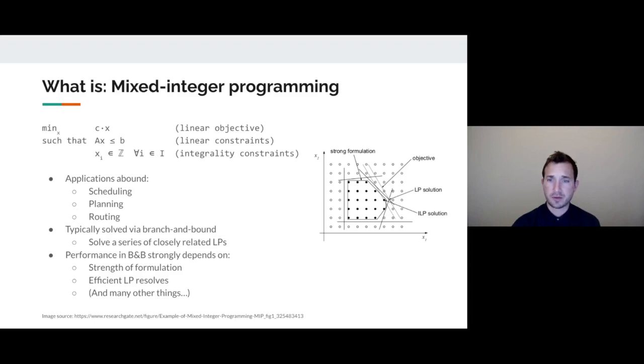Typically MIPs are solved using a branch-and-bound algorithm. You build a search tree and you solve a series of closely related linear programming problems, or LPs, at each node in that search tree. The performance of a branch-and-bound algorithm is strongly dependent on a number of factors. One important one is the strength of the formulation, essentially how tightly that formulation captures the feasible region.